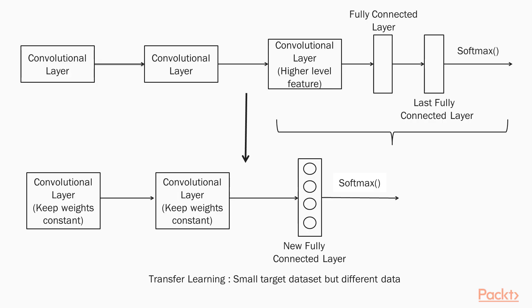The next case is where the target dataset is small but different from the original training dataset. For example, if the original dataset is dog images and the new target dataset is flower images, then we can perform a few important steps.